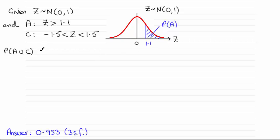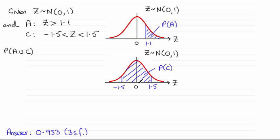When it comes to looking at the probability of C, then that's given as this region here between minus 1.5 and 1.5.